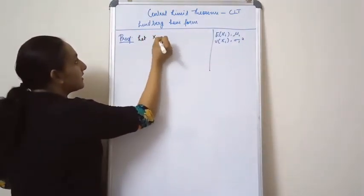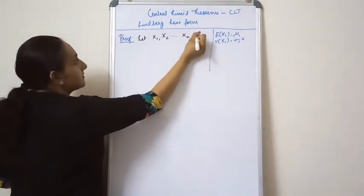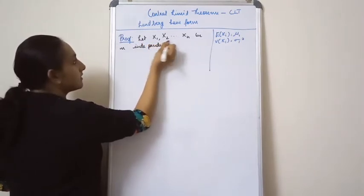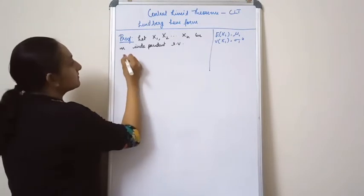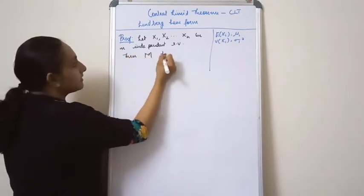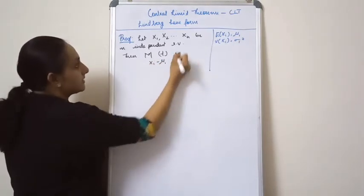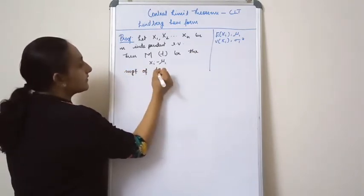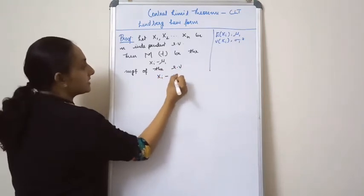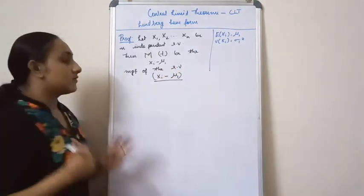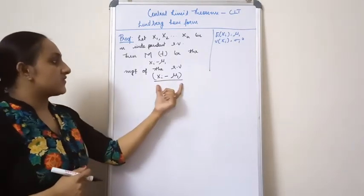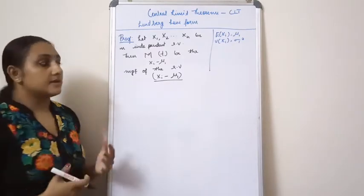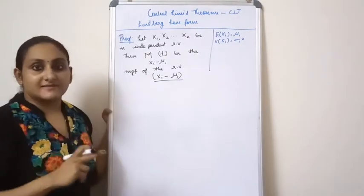Let x1, x2, ..., xn be n independent random variables. We consider the random variable xi - μ₁. Usually we consider random variables like x, y, and z, but here we need to consider the random variable xi - μ₁.